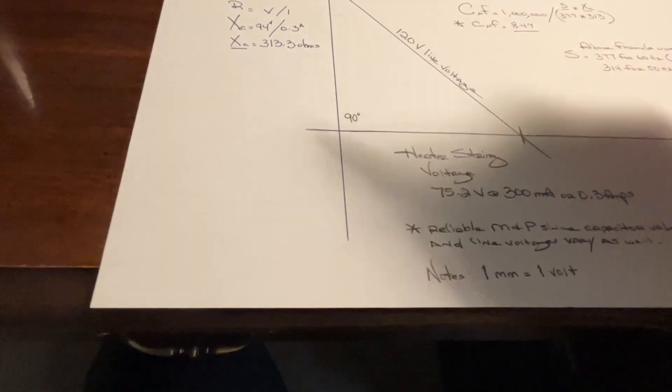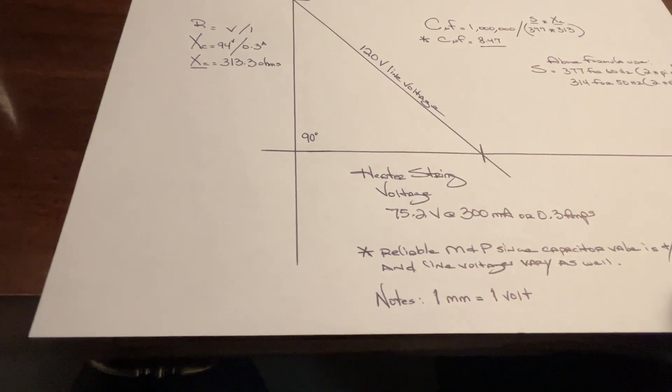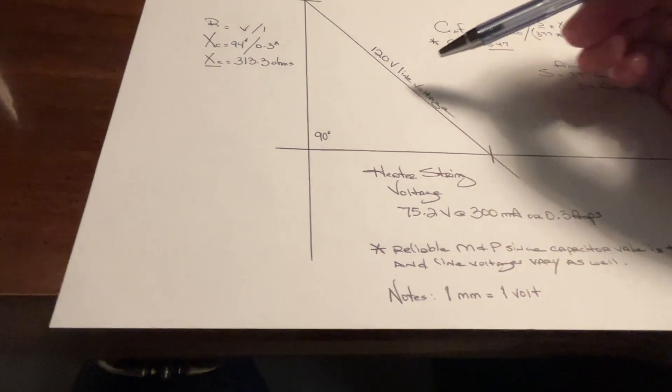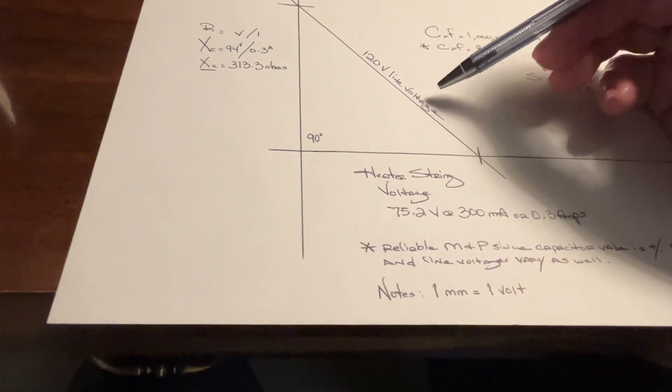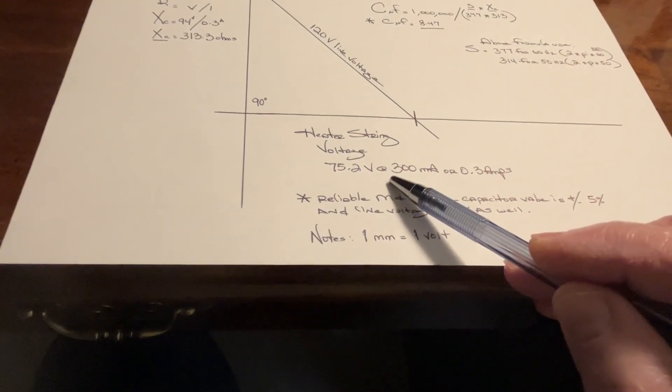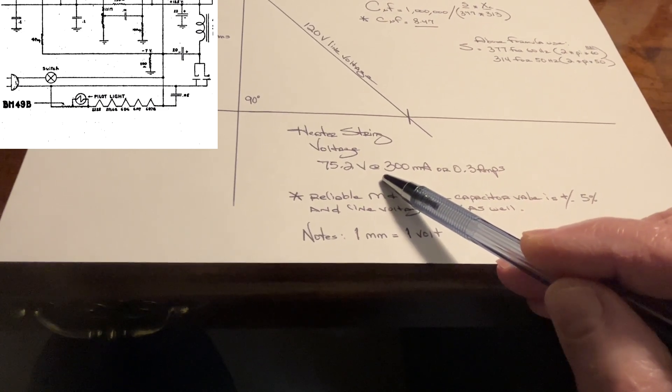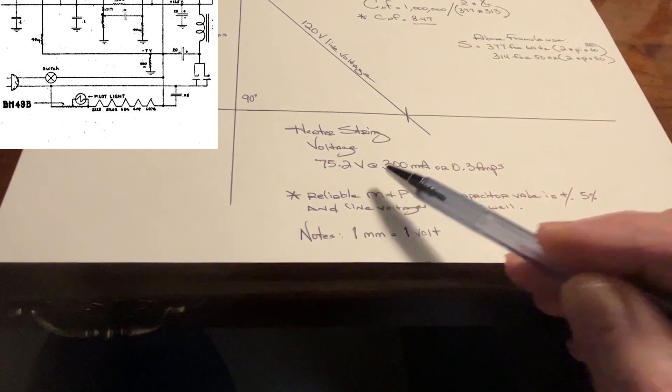The reason for that - the capacitor voltage would be 90 degrees out of phase with the 120 volt line voltage. So looking at my particular receiver, 75.2 volts across the tubes that are in place, including that dial lamp.